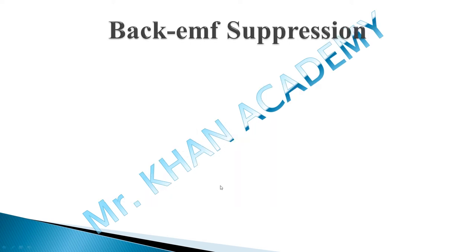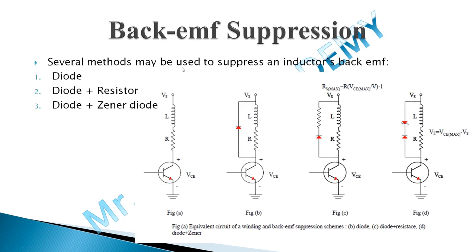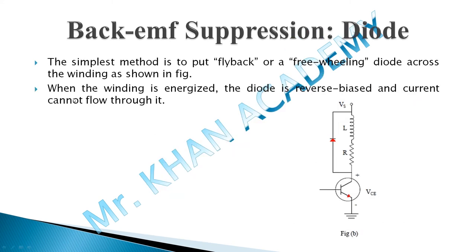To overcome this harmful self-induction voltage effect, we need to apply suppression in order to protect the drive circuit. There are various back EMF suppression methods. The first method is a simple flyback or freewheeling diode placed across the winding. When the winding is energized, the diode is reverse-biased so current cannot flow through it; and when the winding is switched off, it clamps the voltage spike.